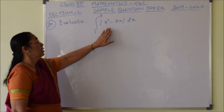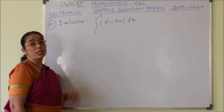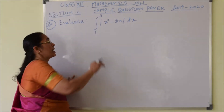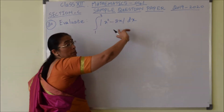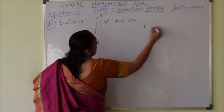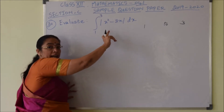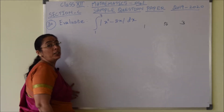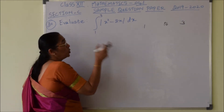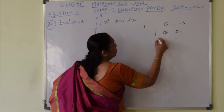We will try to split this modulus function so that we can remove the modulus. The limits are from 1 to 3. We need to see under which limits the function is negative and where it is positive. We can see that x(x minus 2) has a turning point at x equals 2, so we split the integral from 1 to 2 and 2 to 3.